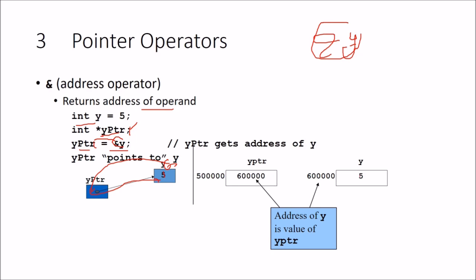For example, say y has value 5 stored at some address — say 6,00,000. This address is not literally that number; it is actually a hexadecimal number depending on whether you have a 32-bit, 16-bit, or 64-bit machine. So that address, say 6,00,000, is assigned to yPtr. Therefore, yPtr contains the address of y, which is a hexadecimal address — the address of y is the value of yPtr.